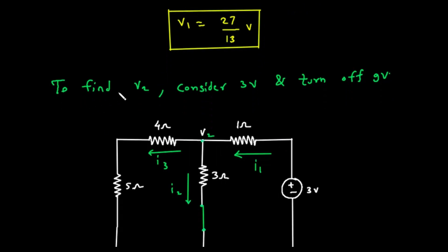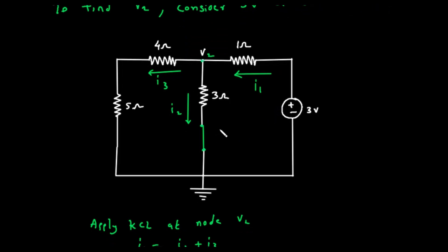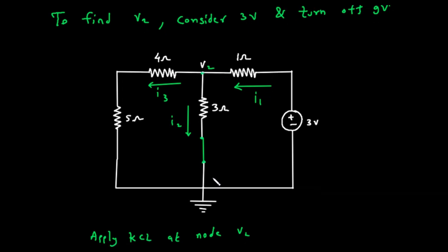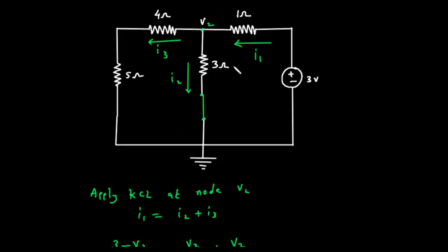Next, we need to find V2. This is the voltage at our target node caused only by the 3 volt source. To do this, we keep the 3 volt source active and turn off the 9 volt source. Remember, turning off a voltage source means replacing it with a short circuit, a plain wire. So, in our original circuit, the 9 volt source is removed and replaced with a wire. This means the bottom of the 3 ohm resistor is now connected directly to ground. The voltage at our target node in this modified circuit is V2. Once again, we'll apply Kirchhoff's current law, KCL, at the node V2. Let's define the currents. The image shows the current from the 3 volt source flowing into the node, and the other two currents flowing out of the node. According to KCL, the incoming current must equal the sum of the outgoing currents.